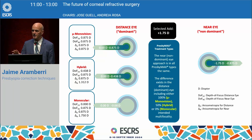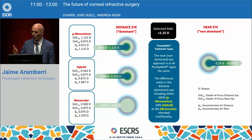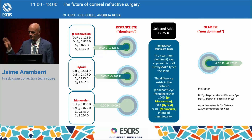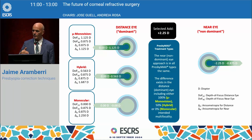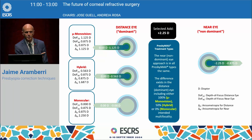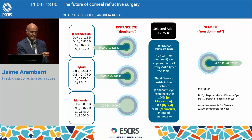This is one strategy with the low add of 1.75 D, but we can add more following the same strategy. The near eye, non-dominant, will target distance vision with some myopia and then we put the addition for near. There are the same three options for the dominant eye regarding whether the priority is distance or near vision.